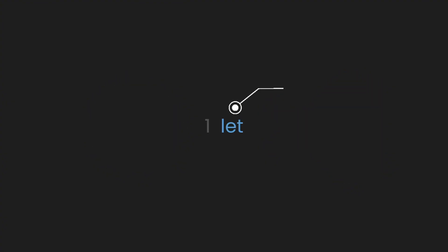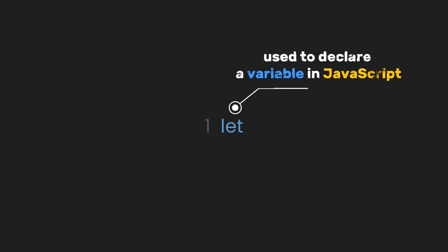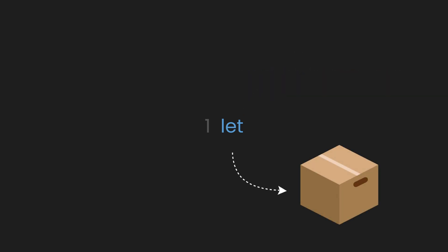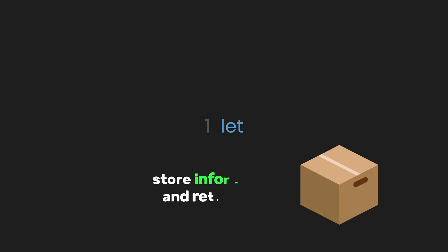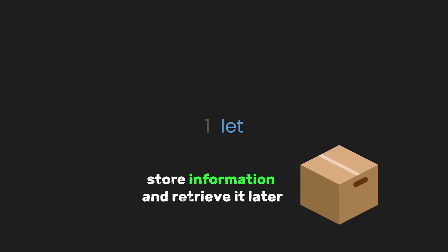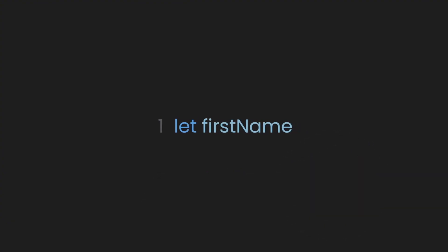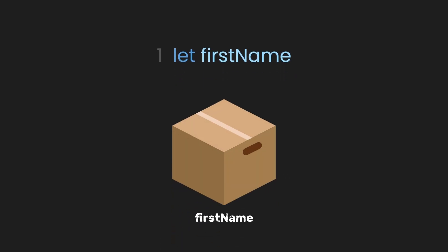For example, in your CodePen or VS Code, let's write `let`. The `let` keyword is used to declare a variable in JavaScript. It creates a named storage space for data, like the box we mentioned earlier. This box is where you can store information and retrieve it later. Next, we name this variable `firstName`. This is like labeling the box so we know exactly where to find our data.